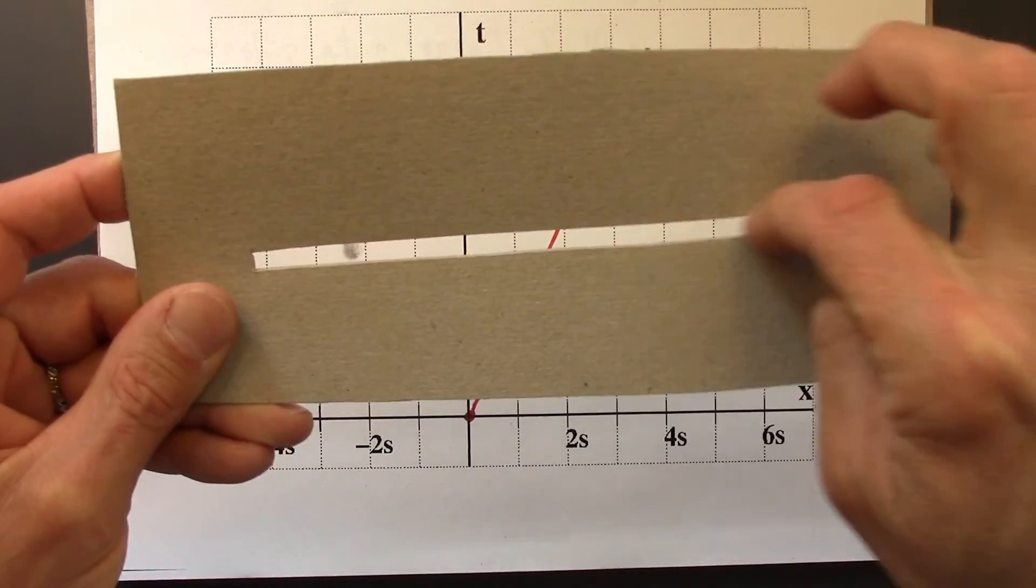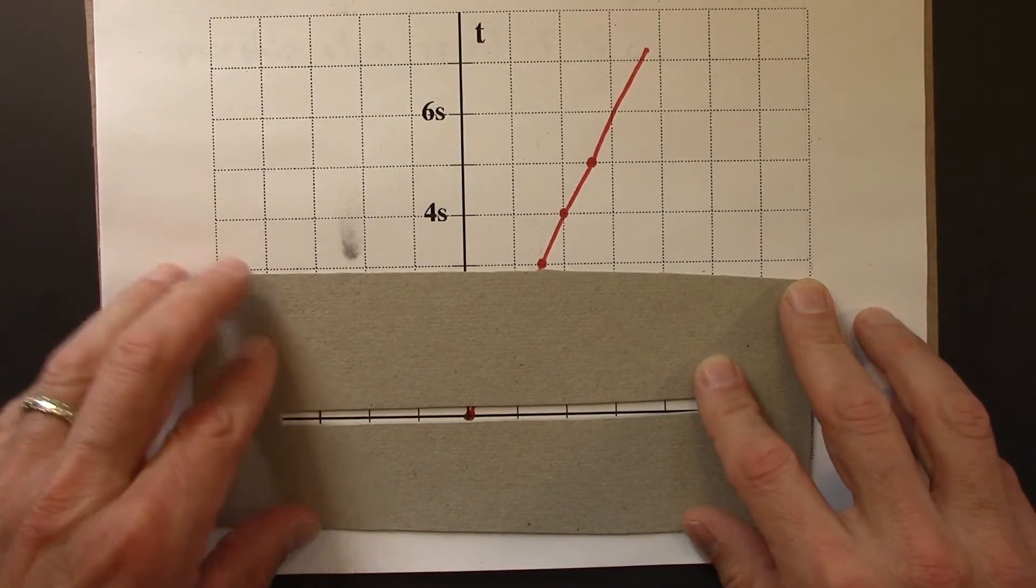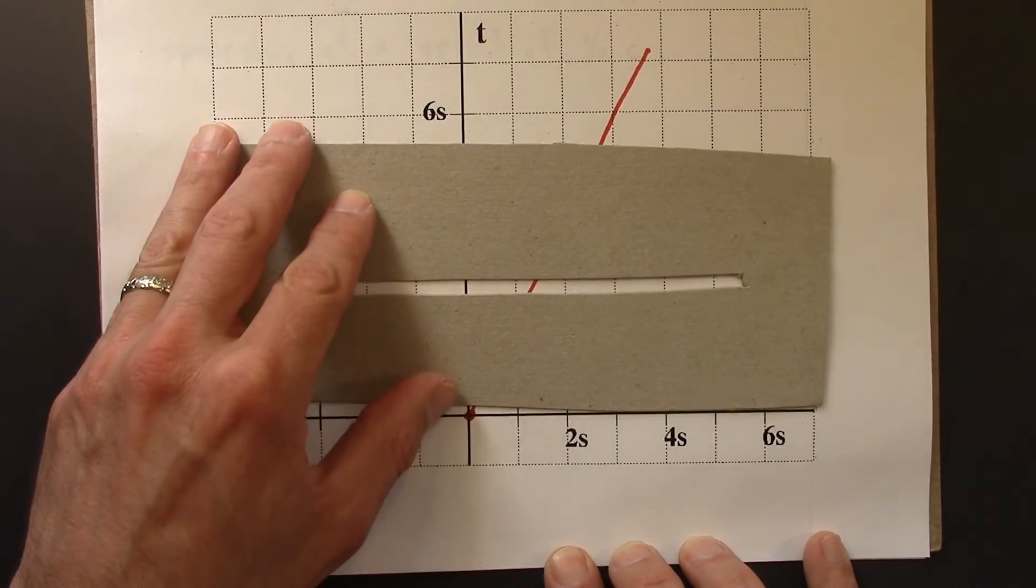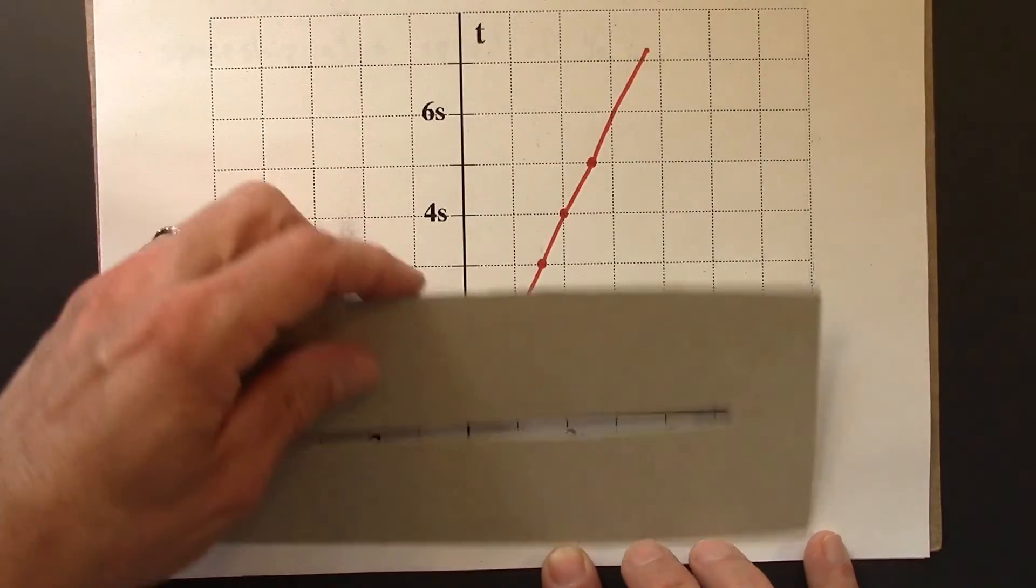And so this slit just gives me a snapshot of the position. And then as I move this up, focus on the orange line, you can see the orange line moving to the right.